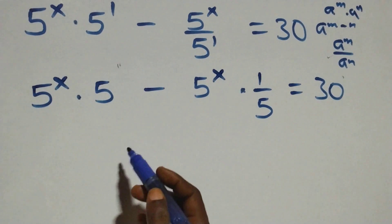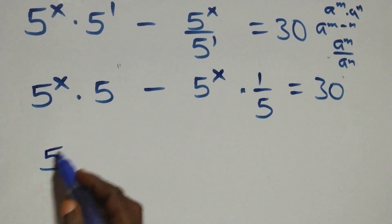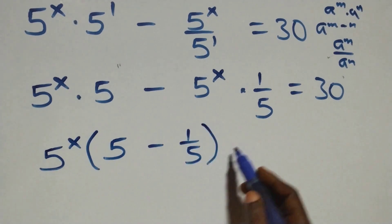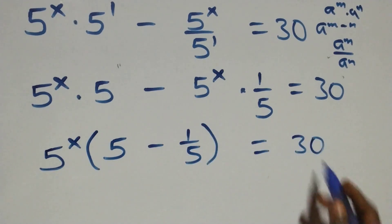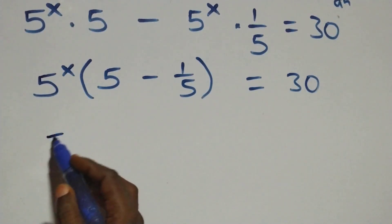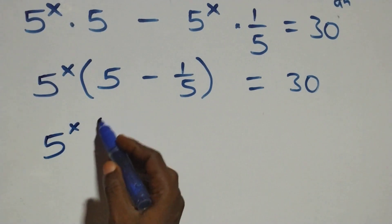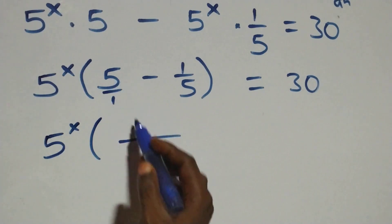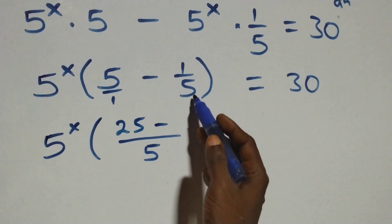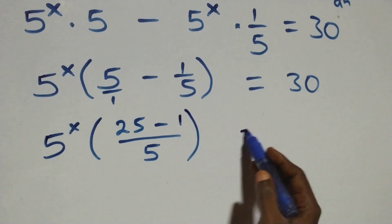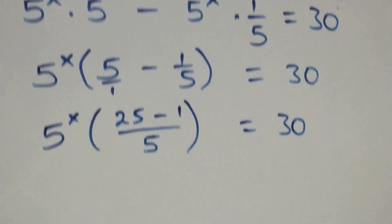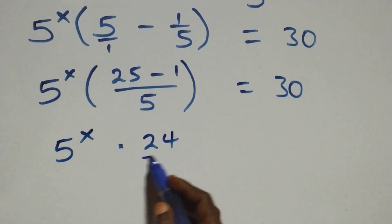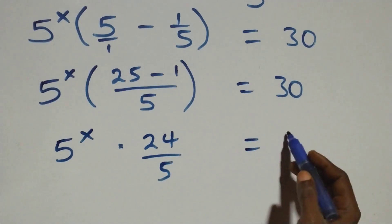We have 5 raised to power x as a common factor. Factor it out, and this becomes 5 raised to power x into brackets: 5 minus 1 over 5. That gives us 5 raised to power x times 25 minus 1, that's 24 over 5, then equals 30.